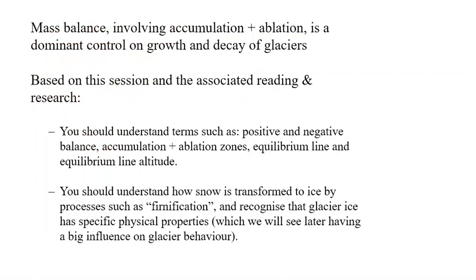Mass balance — involving accumulation and ablation — is a major control on the growth and decay of glaciers. Based on these sessions and the associated reading, make sure you understand terms such as positive and negative mass balance, accumulation and ablation, and the accumulation and ablation zones. Make sure you understand the different types of accumulation and ablation, the equilibrium line and equilibrium line altitude. You should also understand how snow is transformed into ice by processes such as firnification, and recognize that glacier ice has specific physical properties that will become important when we explore how glaciers behave and affect landscapes.